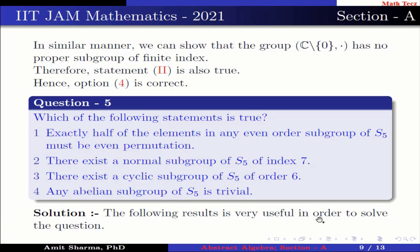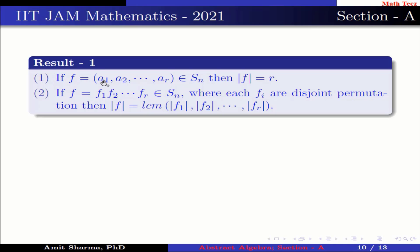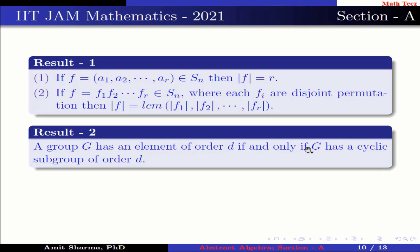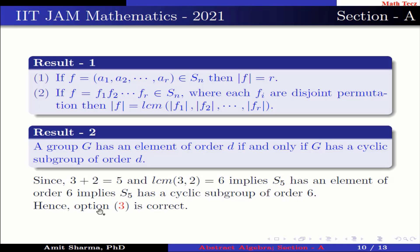The following results are useful. Result 1: If a permutation F = (A1 A2 ... Ar) in Sn, then the order of F is r since it is an r-cycle. If F is a product of disjoint permutations F1, F2, ..., Fr, then the order of F is LCM(order of F1, order of F2, ..., order of Fr). Result 2: A group G has an element of order d if and only if G has a cyclic subgroup of order d. Since 3 + 2 = 5 and LCM(3, 2) = 6, S5 has an element of order 6, which implies S5 has a cyclic subgroup of order 6. Hence option 3 is correct.